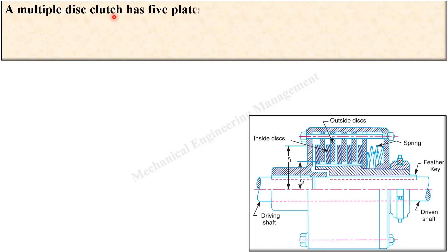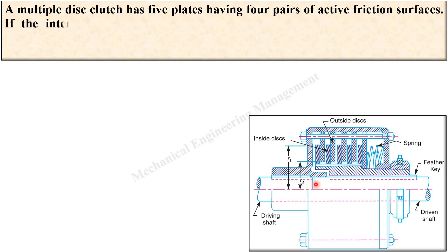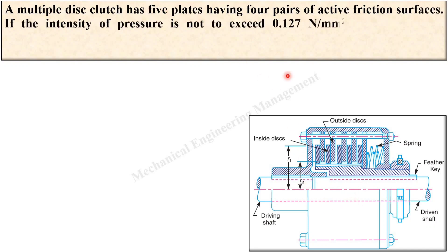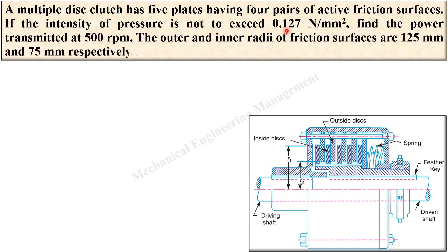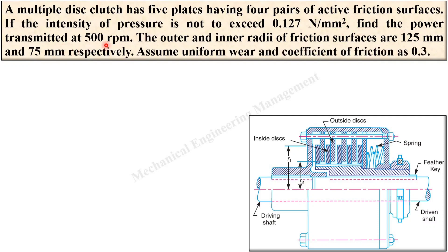A multiple disc clutch has five plates. From this you can imagine the figure has five plates, having four pairs of active friction surfaces. If the intensity of pressure is not to exceed 0.127 Newton per mm square, find the power transmitted at 500 rpm. The outer and inner radii of friction surfaces are 125 mm and 75 mm respectively. Assume uniform wear theory.